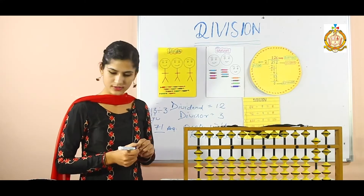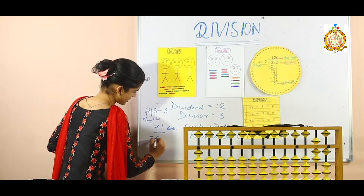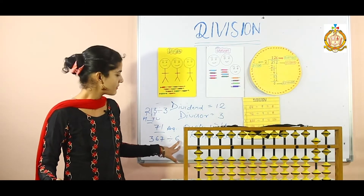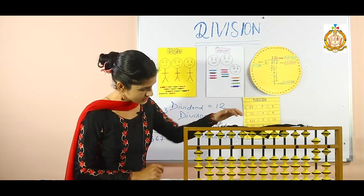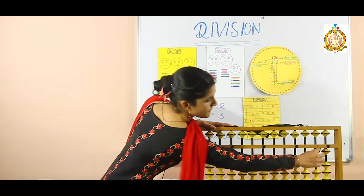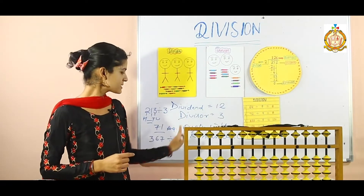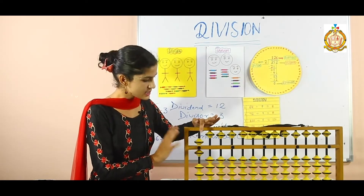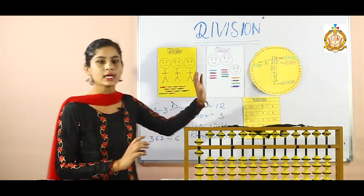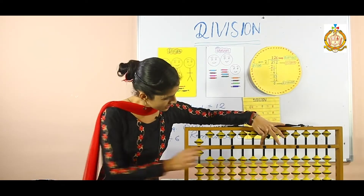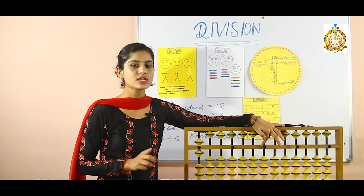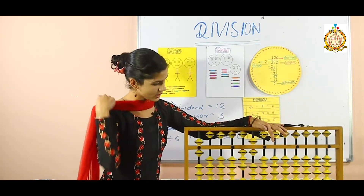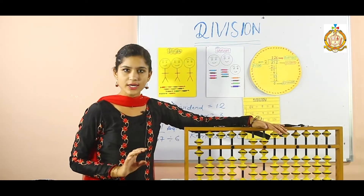Let us take one more example that will have a remainder. 367 divided by 6. Our dividend is 367 and our divisor is 6. We will get a remainder here. Divisor 6 is a butterfly number — add here: 5 plus 1 is 6. Now the dividend 367 contains 3 digits: 3 is on the 100s place, 6 is on the tens place, and 7 is on the units place. 3, 6, and 7 are added. Divisor and dividend are added.